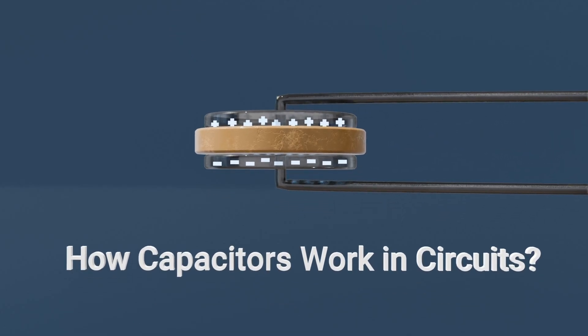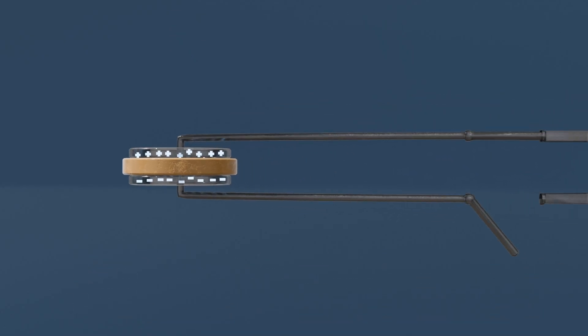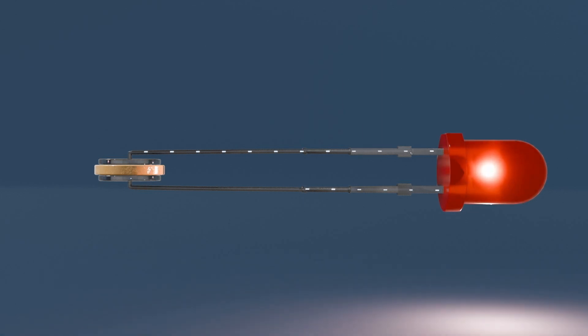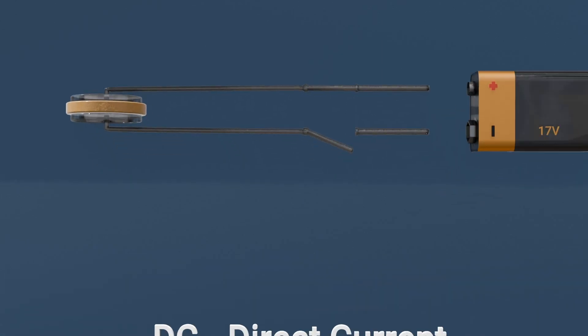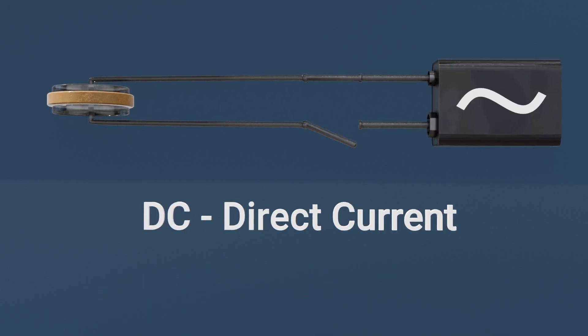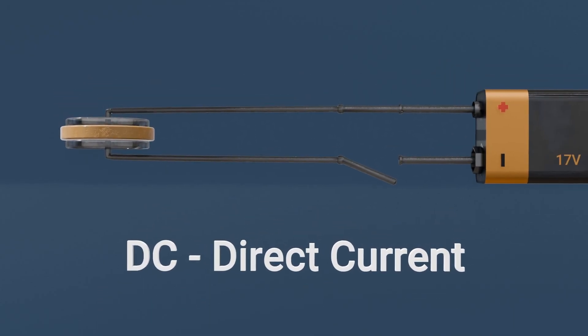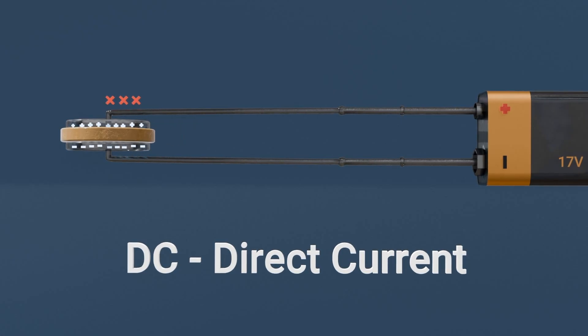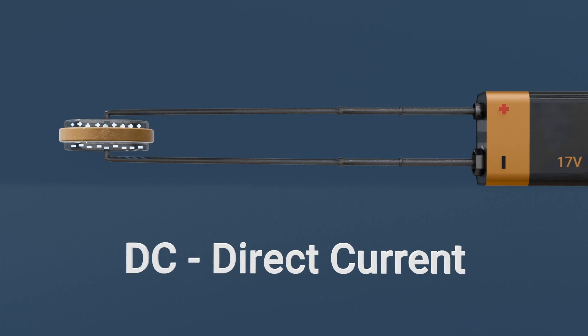How capacitors work in circuits: when connected to a circuit, a capacitor doesn't just sit idle. Its behavior depends on whether the circuit is DC, direct current, or AC, alternating current. In DC circuits, a capacitor charges up to the applied voltage and then blocks the flow of current acting like an open circuit. This property makes capacitors useful in smoothing out voltage in power supplies.